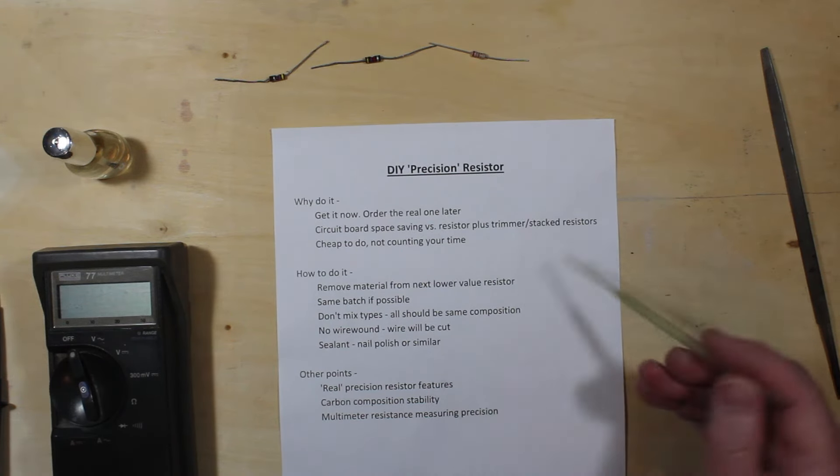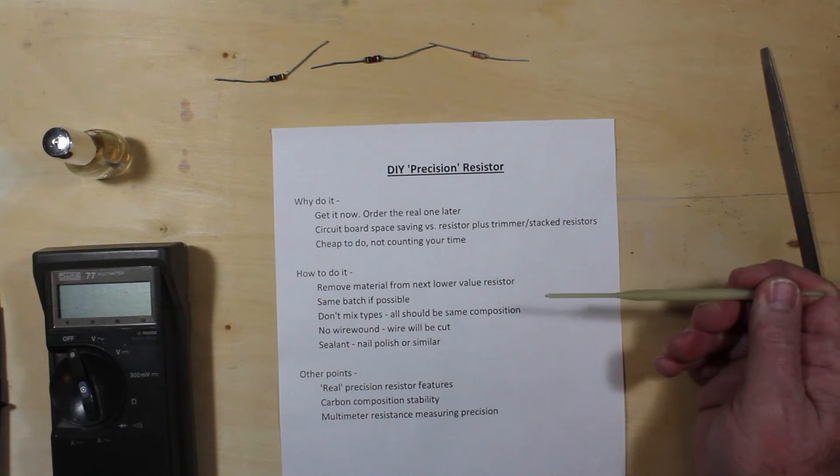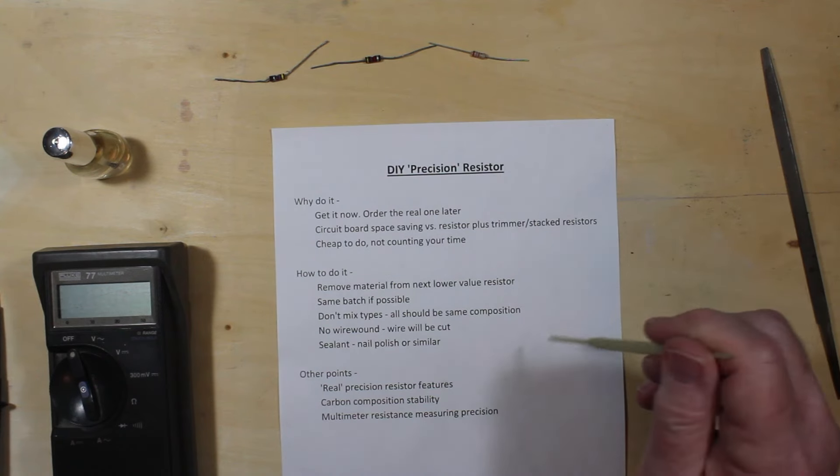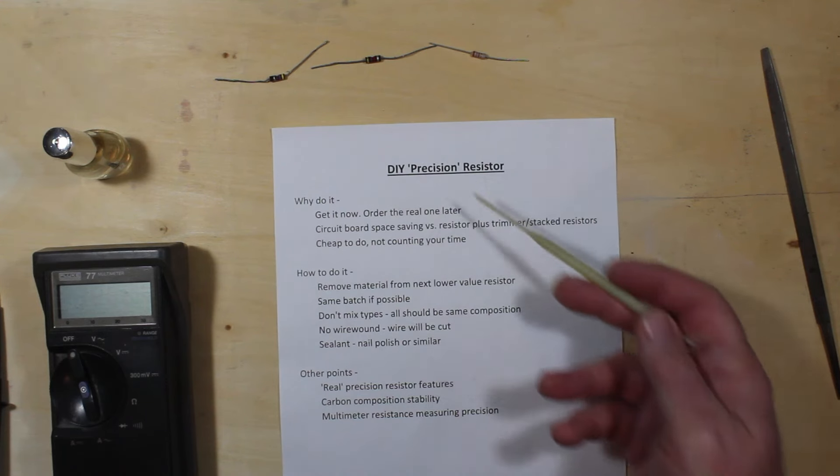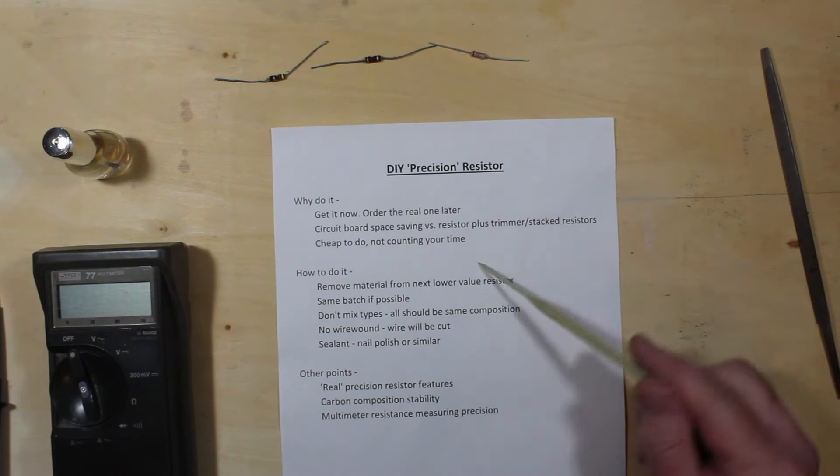Probably by the time you've gone and trimmed off some other resistor or you've figured out which number of resistors you've got to add together to get appropriate value, it's probably faster just to do this. And it's cheap. It's just the cost of a resistor. Of course, not counting your time.